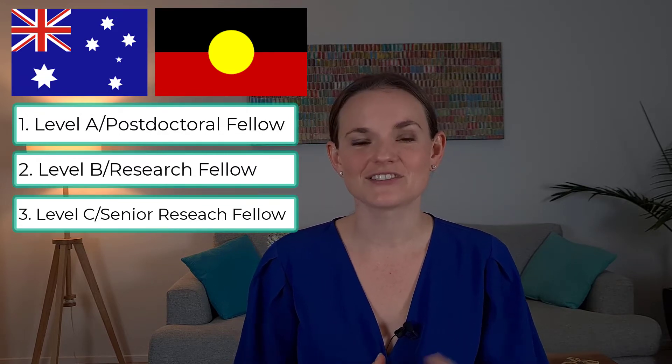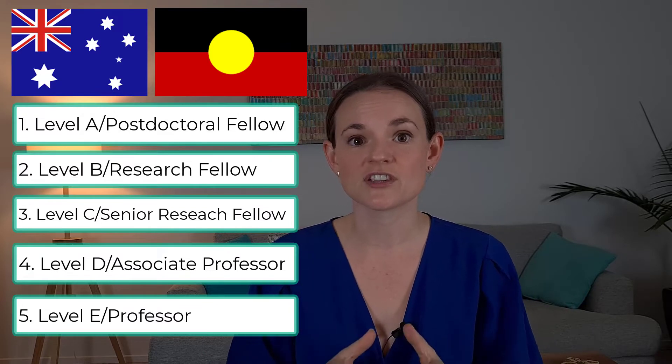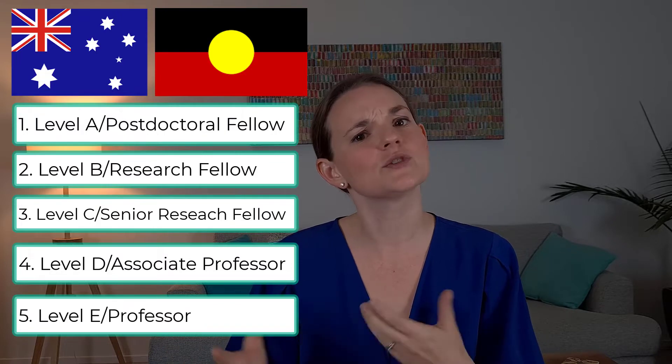The next two levels are where the names start to get a little confusing. In Australia, after Level C we have Level D, sometimes called associate professor, but it is roughly equivalent to being a professor or full professor in the United States. And last but not least, Level E, also sometimes referred to in Australia as a professor, but roughly equivalent to being a distinguished professor or chair in the United States. So right away, we see one of the biggest differences: in Australia, the title 'professor' is reserved for really only the top academic faculty, whereas in the United States it's a little more of a job title.